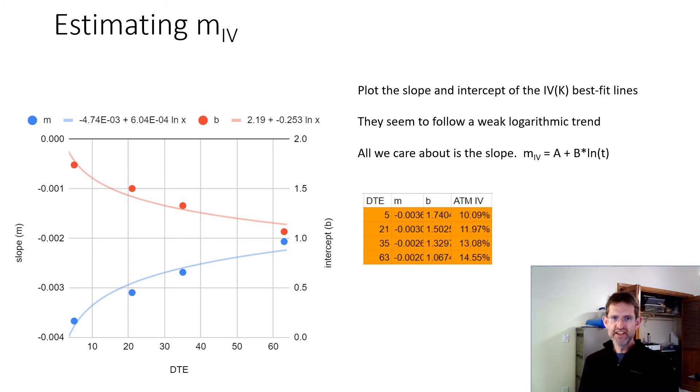So in this case, I'm assuming that m_IV equals A plus B times the natural log of time. So in this specific case, for this day and these options and this stock,